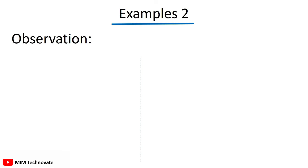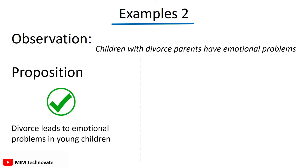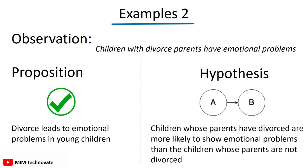Example 2: Let's suppose the observation is that children with divorced parents have emotional problems. In the case of a proposition, we will say: divorce leads to emotional problems in young children — you can see that the nature of the causal relationship between the two variables is unclear. In the case of a hypothesis, we will say: children whose parents have divorced are more likely to show emotional problems than children whose parents are not divorced — you can see that the nature of the causal relationship between two variables is clear.